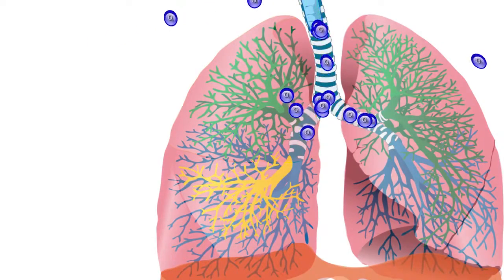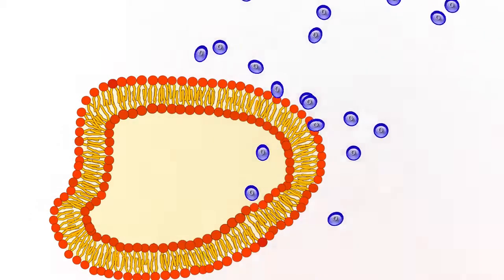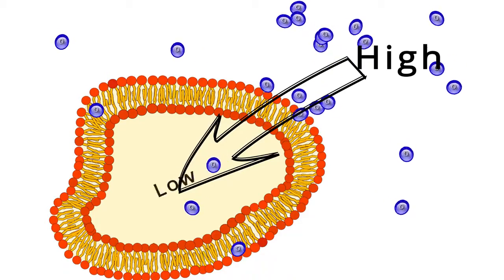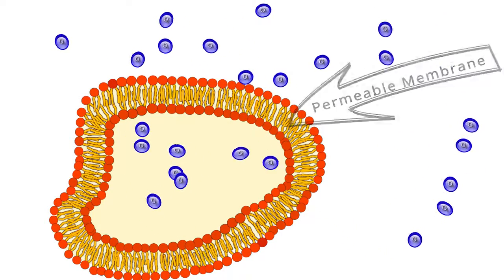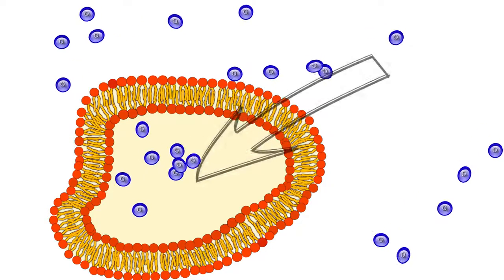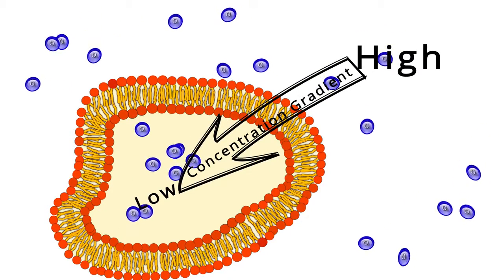When cells use simple diffusion, molecules naturally move from an area of high concentration to one of low concentration through a permeable membrane. The difference between the two sides is called the concentration gradient.